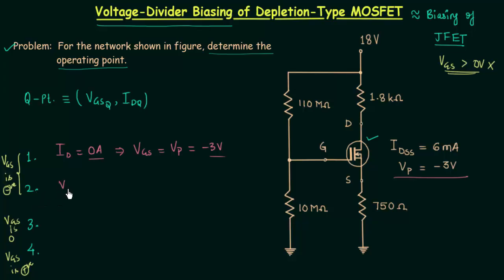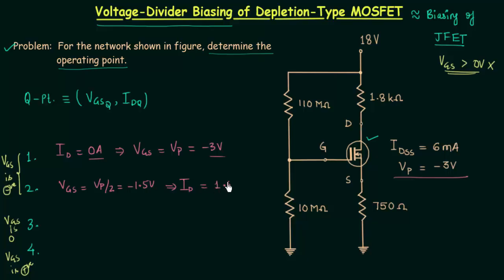For the second point, set VGS equal to VP/2, which means VGS is equal to -1.5V since VP is equal to -3V. When you put VGS equal to -1.5V into Shockley's equation you get drain current ID equal to 1.5mA. So the two coordinates of the second point are (VGS = -1.5V, ID = 1.5mA). Both of these first two points are in the region where VGS is negative.